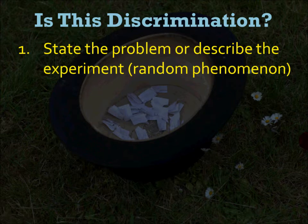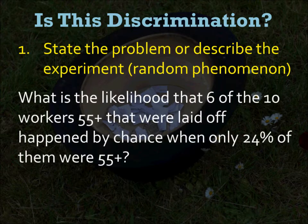Let's apply the age discrimination simulation to these five steps. The first step is to state the problem or describe the experiment. The problem is: what is the likelihood that six of the ten workers 55 and over that were laid off happened by chance, when only 24% of them were 55 and over? That is the problem we want to answer through this simulation.